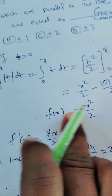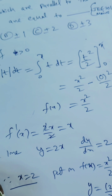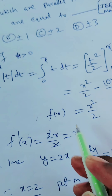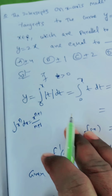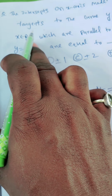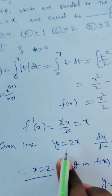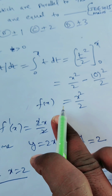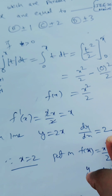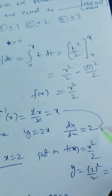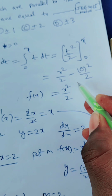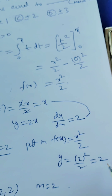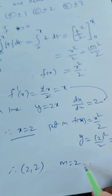Now, the differentiation of this function: f'(x) equals 2x/2, which is x. The slope of the given line y equal to 2x is 2, so dy/dx equals 2. Setting x equal to 2, we get the x-value as 2. Putting x equal to 2 into the function, y equals 2²/2 equals 2. So the point is (2, 2) and the slope is 2.